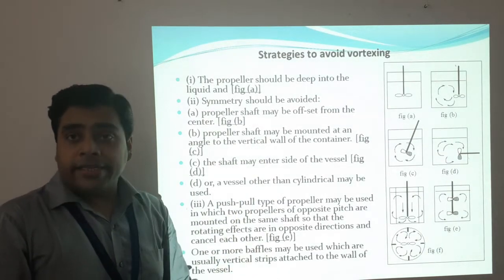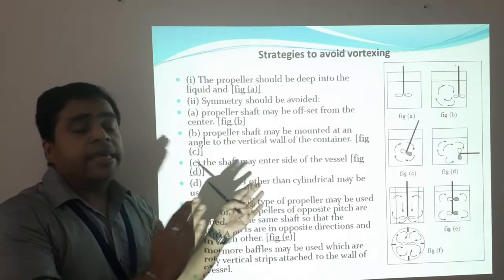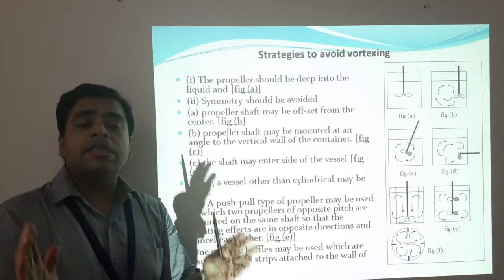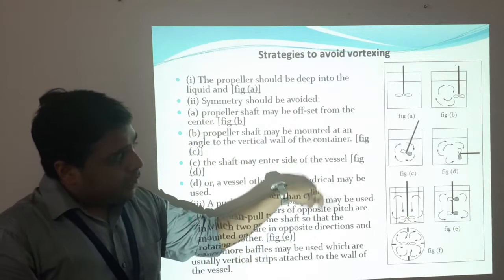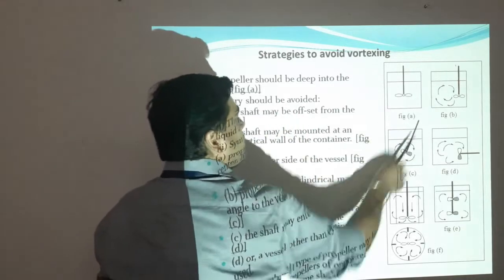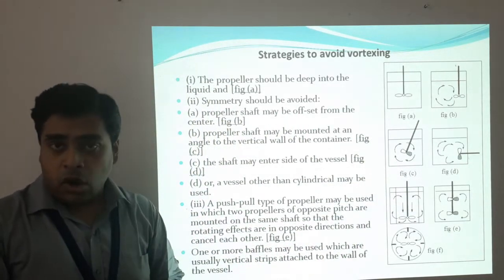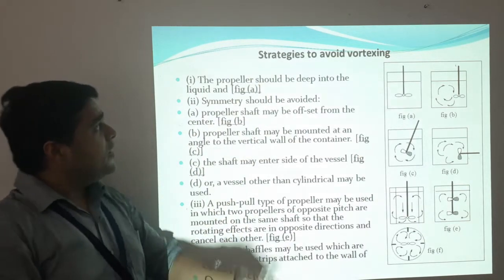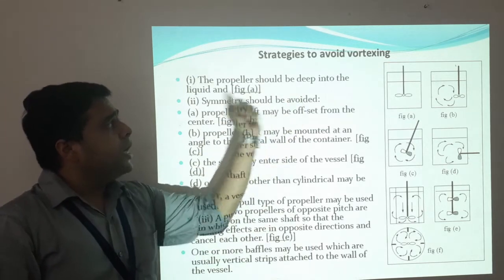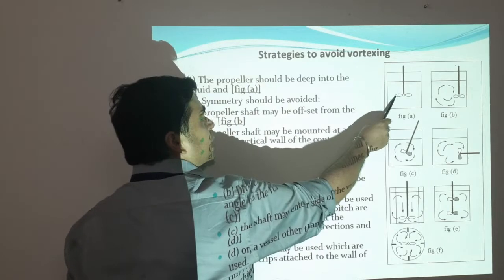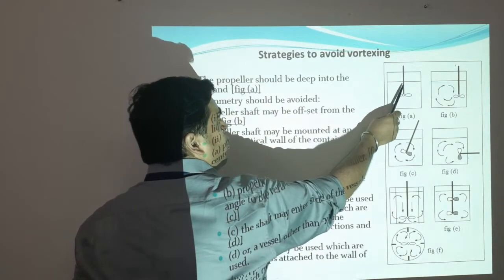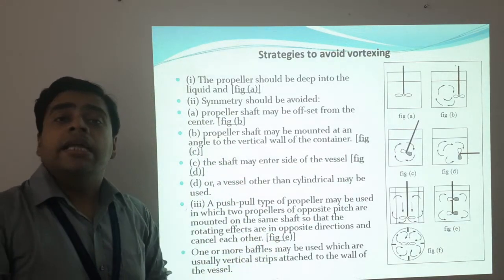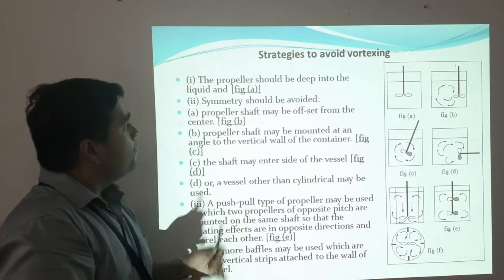How to avoid vortexing? We cannot change the entire design, but we have to make some modifications practically in the positioning of the impellers, and these have been seen to give good results and reduce vortexing. The first strategy: the propeller should be placed deep into the liquid. When the propeller is kept not at the center or at the surface but deep inside the liquid, vortexing can be avoided.